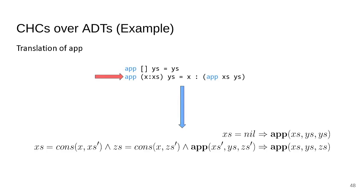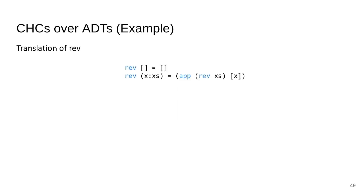We move on to the inductive case, where we have the output symbol Zs and the input symbol Xs. We say that the predicate APP held for the tail of Xs and the tail of Zs — Xs-prime and Zs-prime. That should imply the append of Xs, Ys, and Zs.